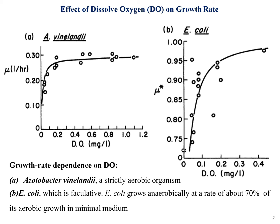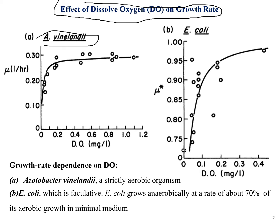This was the last topic we covered in the previous video: the effect of dissolved oxygen on growth rate. We talked about two bacteria — Azobacter and E. coli — and their dependencies on oxygen. As shown in the graph, these two differ in nature: Azobacter is an aerobic organism whereas E. coli is a facultative organism, so we see some differences between their graphs.